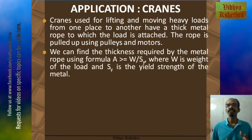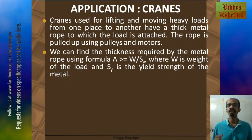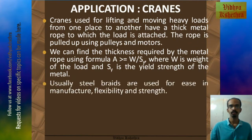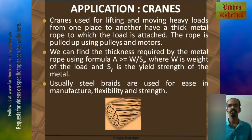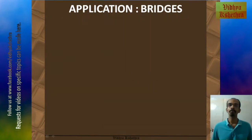We can find the thickness required by the metal rope using the formula: area of cross-section should be greater than or equal to W divided by SY, where W is the weight of the load and SY is the yield strength of the metal. Usually steel braids are used for ease in manufacture, flexibility, and strength.